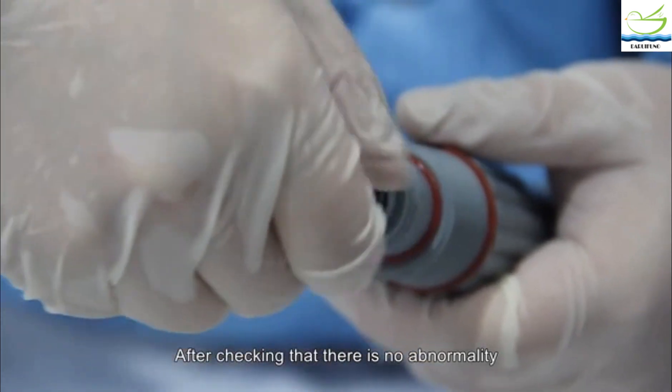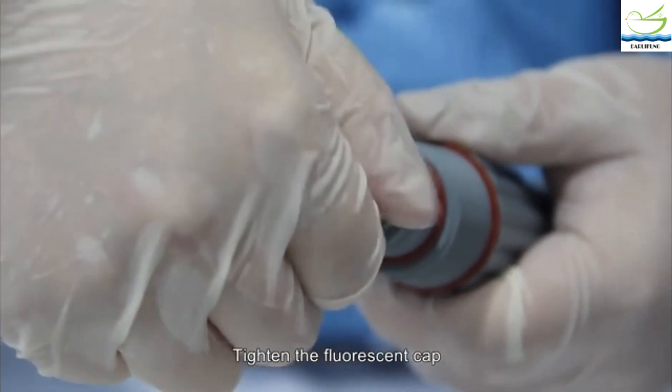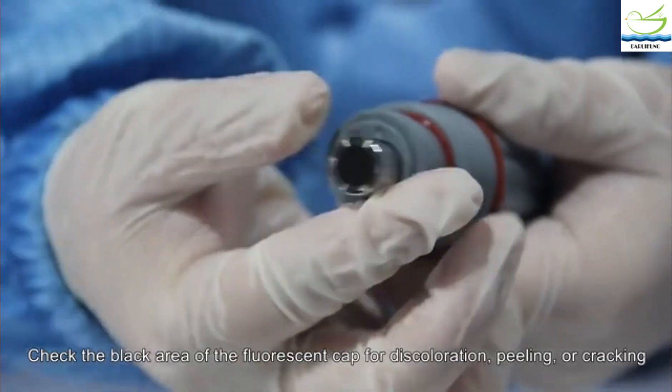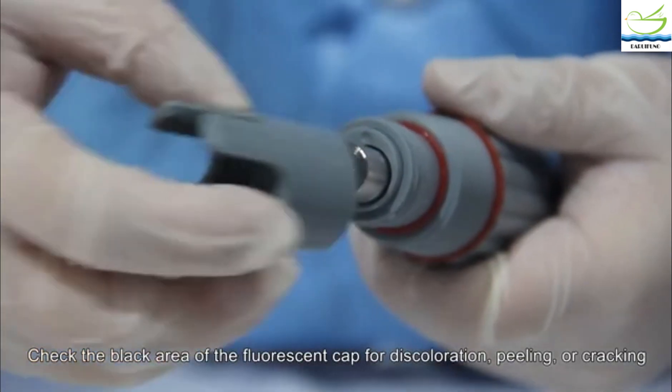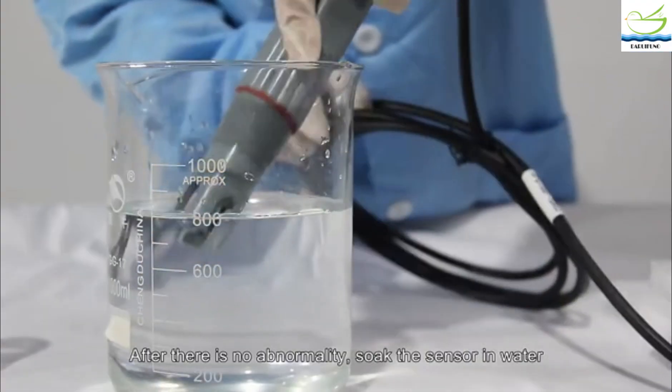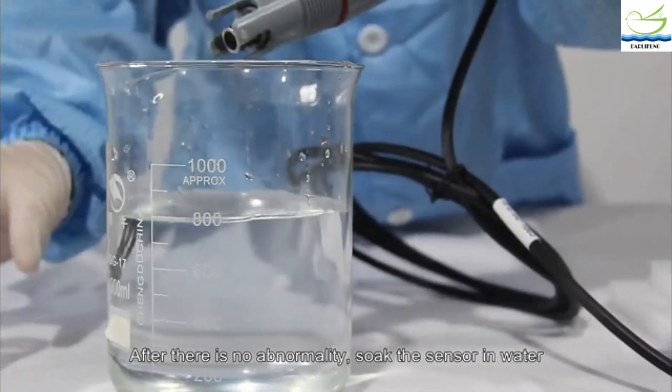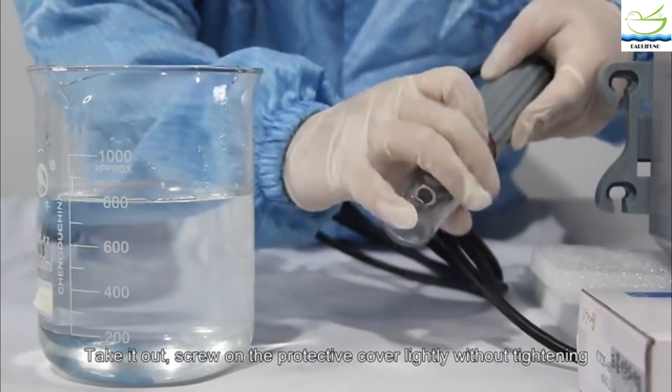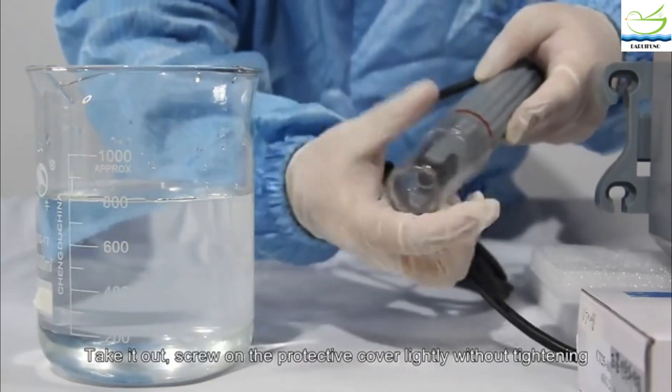After checking that there is no abnormality, tighten the fluorescent cap. Check the black area of the fluorescent cap for discoloration, peeling, or cracking. After there is no abnormality, soak the sensor in water, take it out, and screw on the protective cover lightly without tightening.